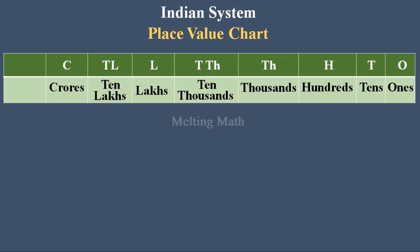The next digit comes under crore place, represented as C, and the next digit comes under 10 crore, represented as TC. This place value chart is very important because in this chapter's exercise questions they ask many questions based on the Indian system place value chart. You need to remember these place values.